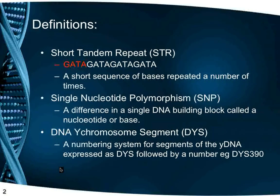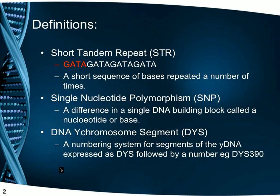Before we go any further, we need to define a couple of acronyms. An STR is a short tandem repeat, a short sequence of bases that is repeated a number of times. A SNP is a single nucleotide polymorphism, a change in a single base. DYS is a numbering system for segments of Y-DNA expressed as DYS followed by a number, e.g. DYS 390.